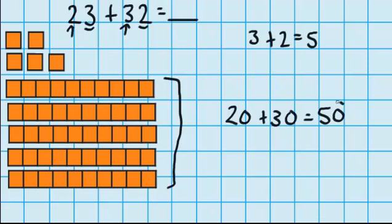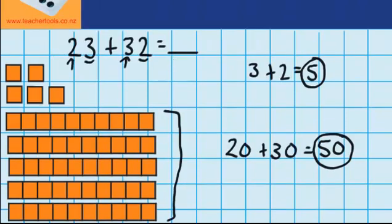So now we've moved all our 10's together and got 50, and we've moved all our 1's together and got 5. Now we just need to put these together: 50 plus 5 equals 55. So 23 plus 32 equals 55.